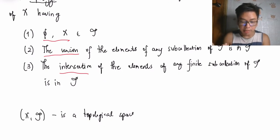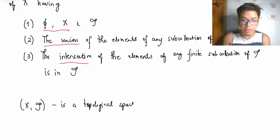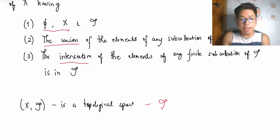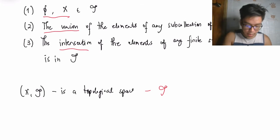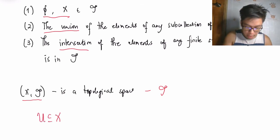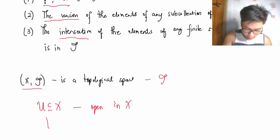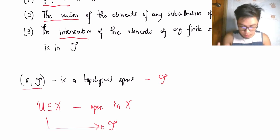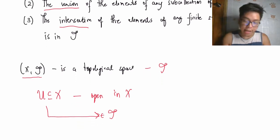When X together with tau is a topology, we call that a topological space. If there is no confusion, we may simply write it as a topological space. If X and tau form a topological space, then we say that a given subset U of X is open in X if U belongs to the collection tau.